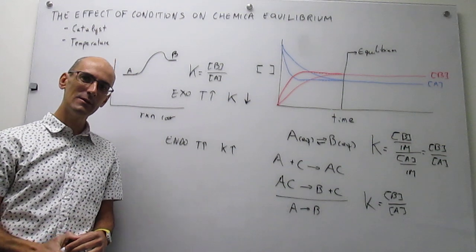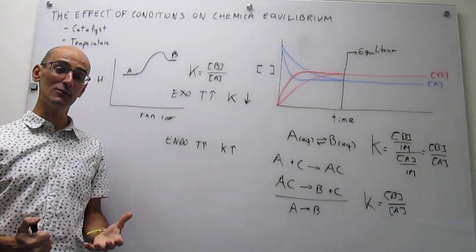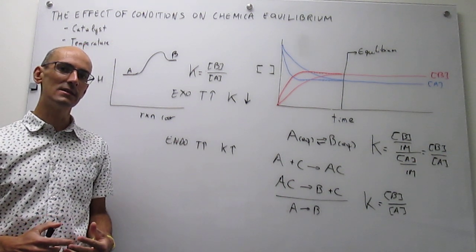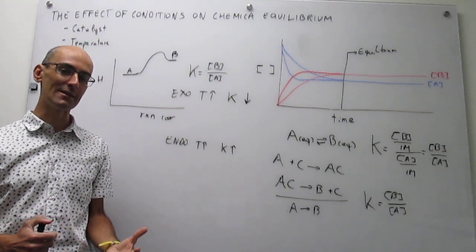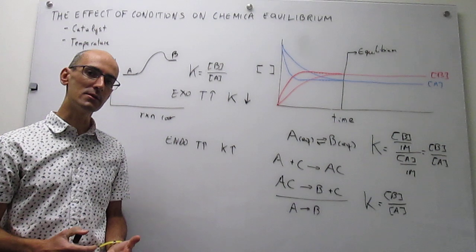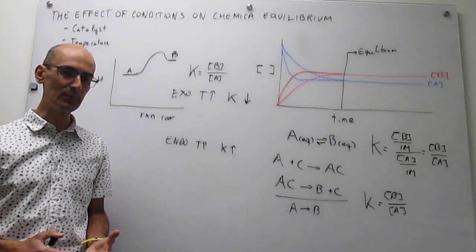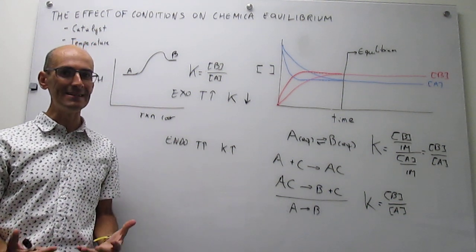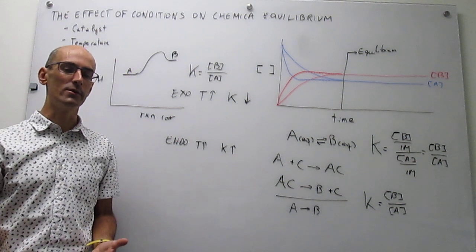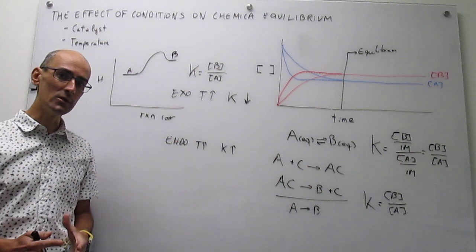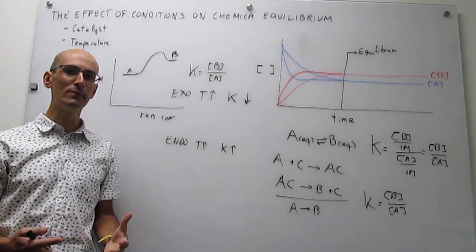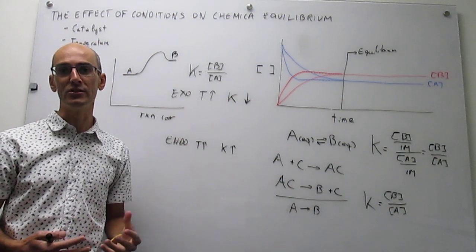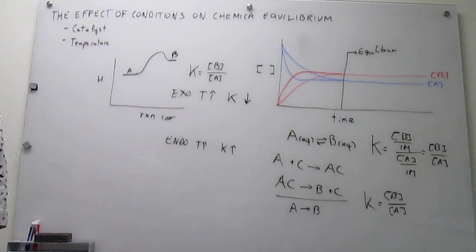In this video we have examined two effects on the equilibrium constant. First, we have seen that a catalyst does not change the equilibrium constant at all — it allows the equilibrium to be reached faster. Then we examined the effect of temperature invoking the Le Chatelier principle, and we saw that whether the equilibrium constant increases or decreases with increasing temperature depends on whether the reaction is exothermic or endothermic. In the next video, we are going to work out some formalism to predict exactly how much the equilibrium constant changes for a given change in temperature. Thank you very much.